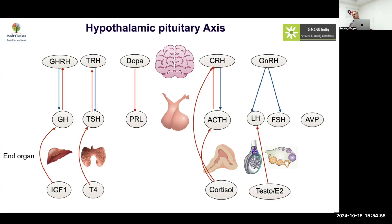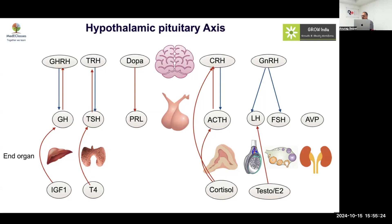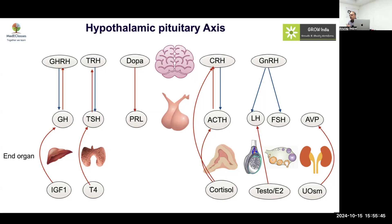For glucose, we worry below 60 or above 200; for calcium, 8 to 10 is the range. But for osmolality, the range is only 280 to 284 — a very, very small range. That's why AVP is directly released from the hypothalamus. AVP works on the kidneys to increase the permeability of the collecting tubule to water, taking up more solute and controlling osmolality.